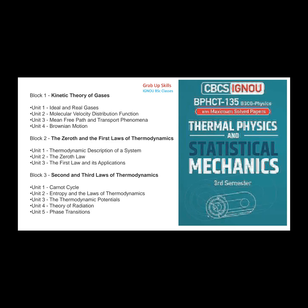There are four units. First of all, ideal and real gases. Then molecular velocity distribution function — in this distribution function, you will have theoretical plus numerical plus little derivation concepts. And then mean free path and transport phenomena. Here you will get the ideal gas velocity. And then Brownian motion — Brownian motion is one of the most important concepts. The next block is the zeroth and first law of thermodynamics. The zeroth and particle stability in the zeroth system, thermodynamic description of system, the zeroth law and the first law and its application.